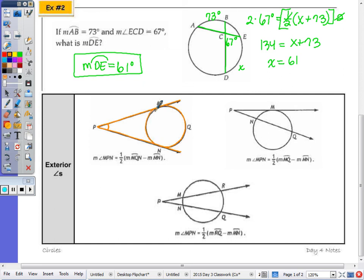That's with two tangents. Now I have a tangent and a secant. That angle P intercepts these two arcs. You have to pay close attention to the arcs that are intercepted by either two tangents, a tangent and a secant, or two secants.